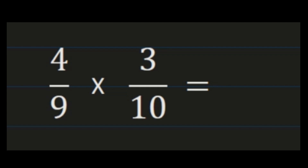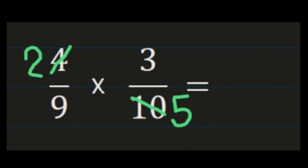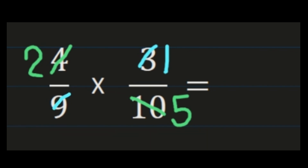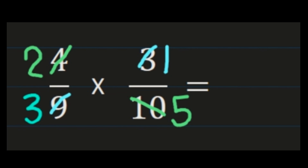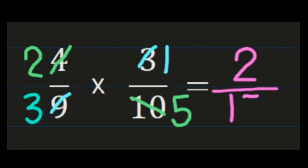For our final example, we have 4 ninths times 3 tenths. I'm going to cross simplify before I get started. Looking at 4 and 10, they're both even and share a common factor of 2: 4 divided by 2 is 2, and 10 divided by 2 is 5. Then 3 and 9 share a common factor of 3: 3 divided by 3 is 1, and 9 divided by 3 is 3. Now multiplying with simplified numbers: numerators 2 times 1 is 2, and denominators 3 times 5 is 15. 2 fifteenths is my product. It does not need to be simplified, so 2 fifteenths is my final answer.